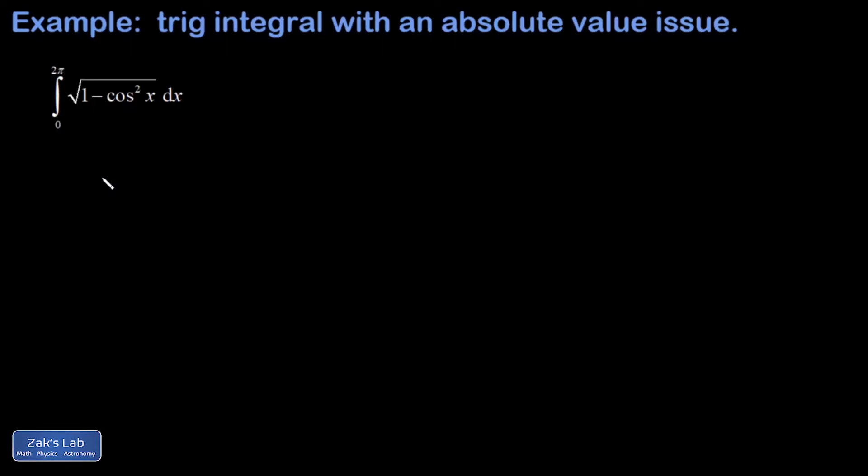In this video we're presented with a fairly simple trig integral. Inside the square root we can use a Pythagorean identity to simplify it, but there's a really subtle sign issue that arises involving the absolute value function. What we're going to do is churn through it and ignore the absolute value, see what goes wrong, and then go back and think carefully about how things have to be adjusted to get a sensible result.